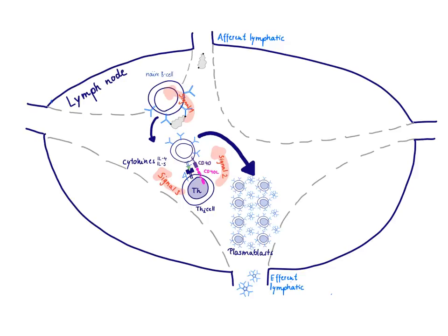Although the IgM antibody can do some useful things like complement activation, it's not a very good antibody — it doesn't have very high affinity. So we want to make higher affinity antibodies and also more specialized antibodies of other isotypes in order to fight the infection.